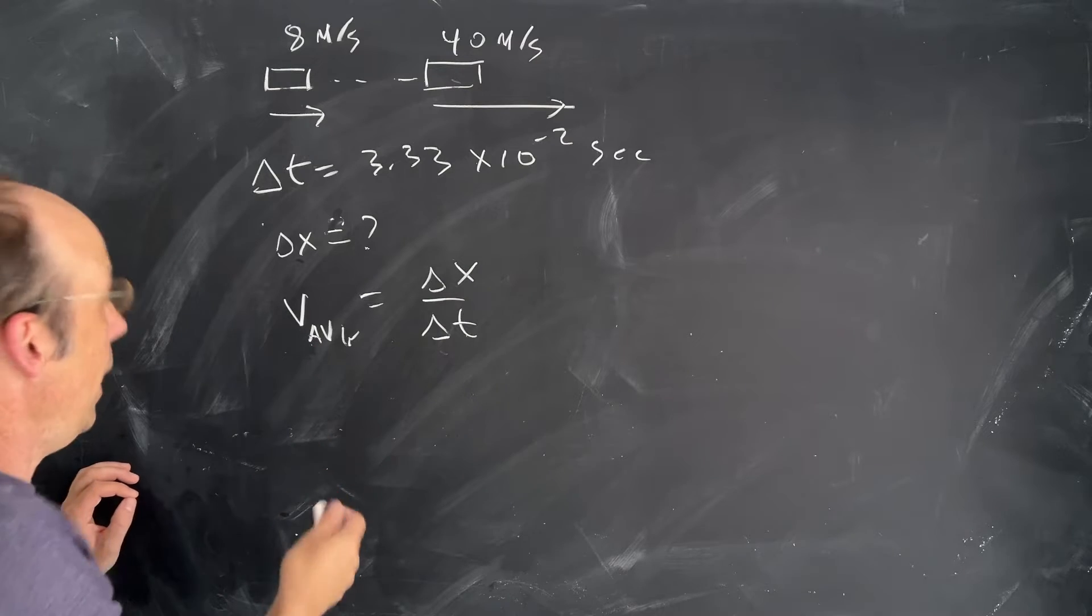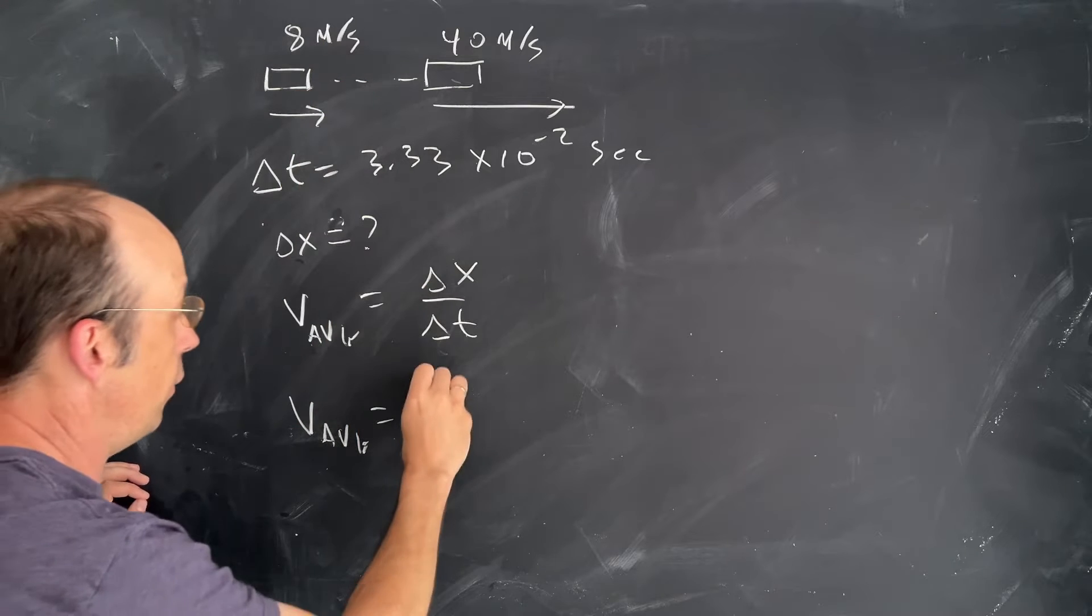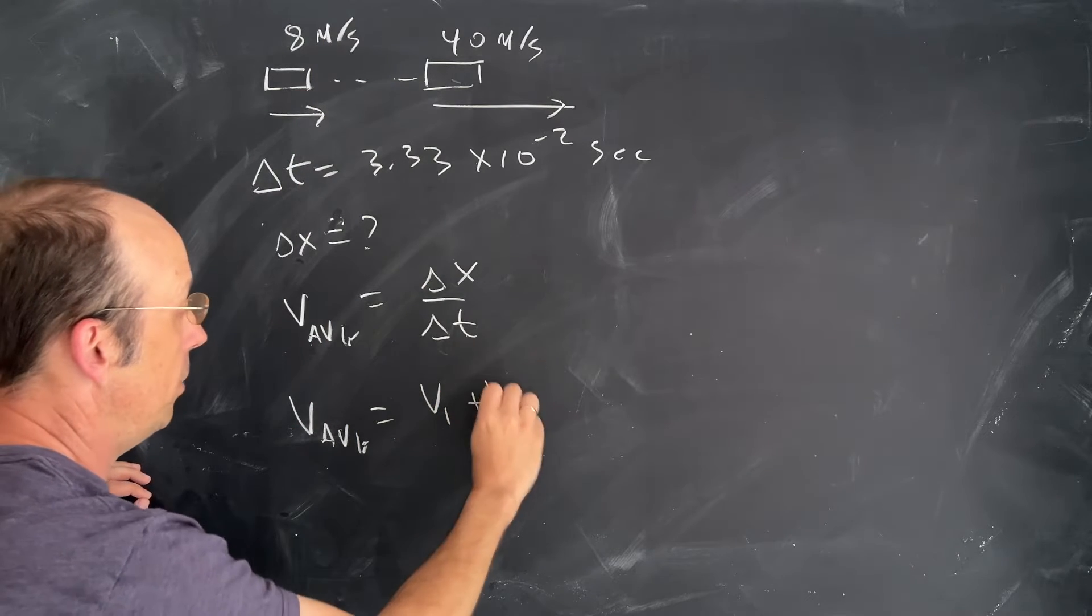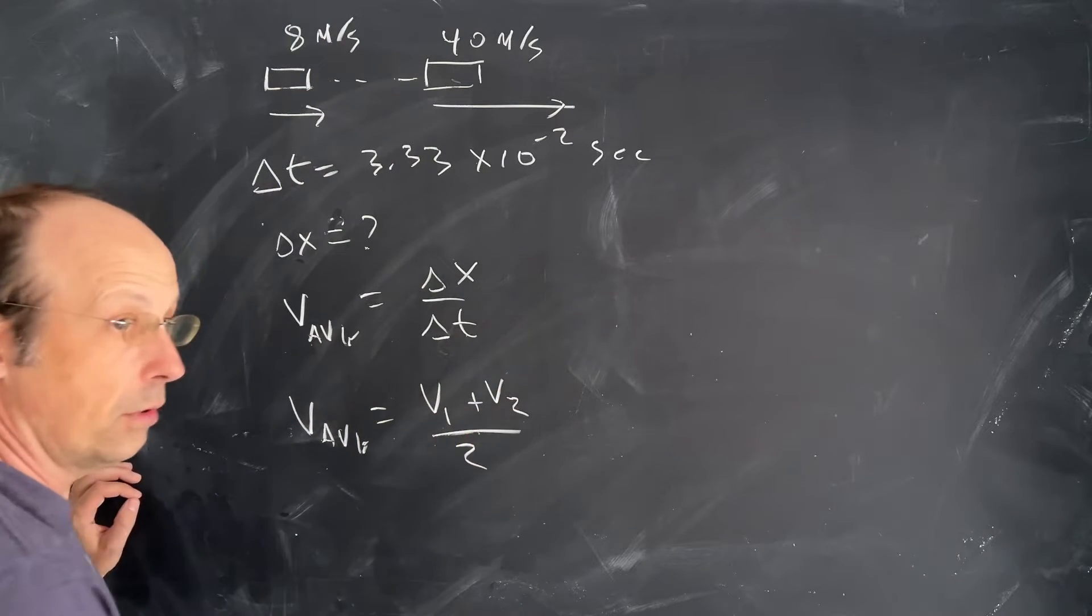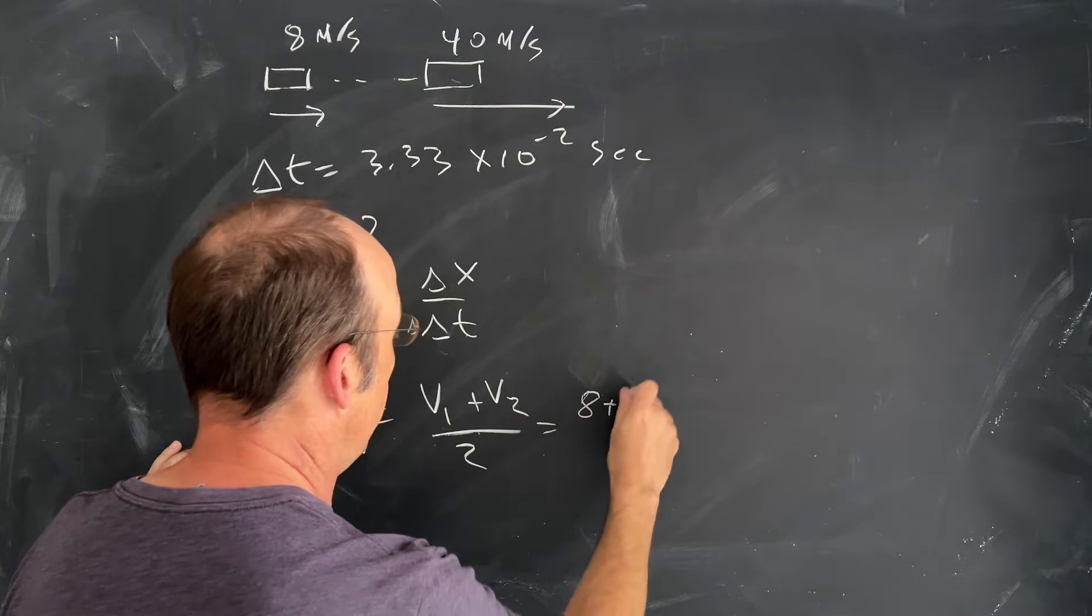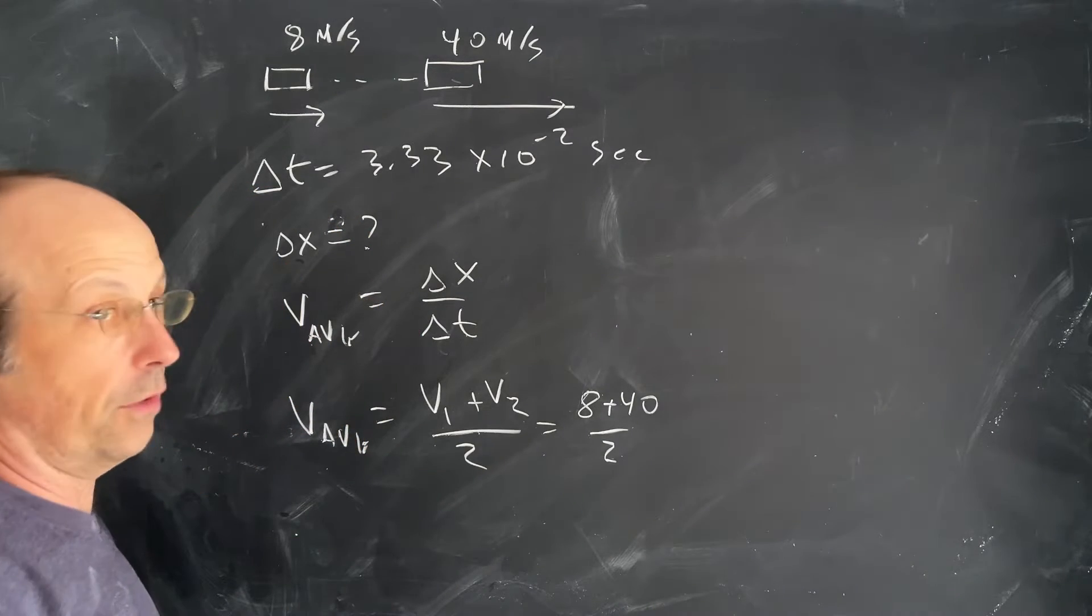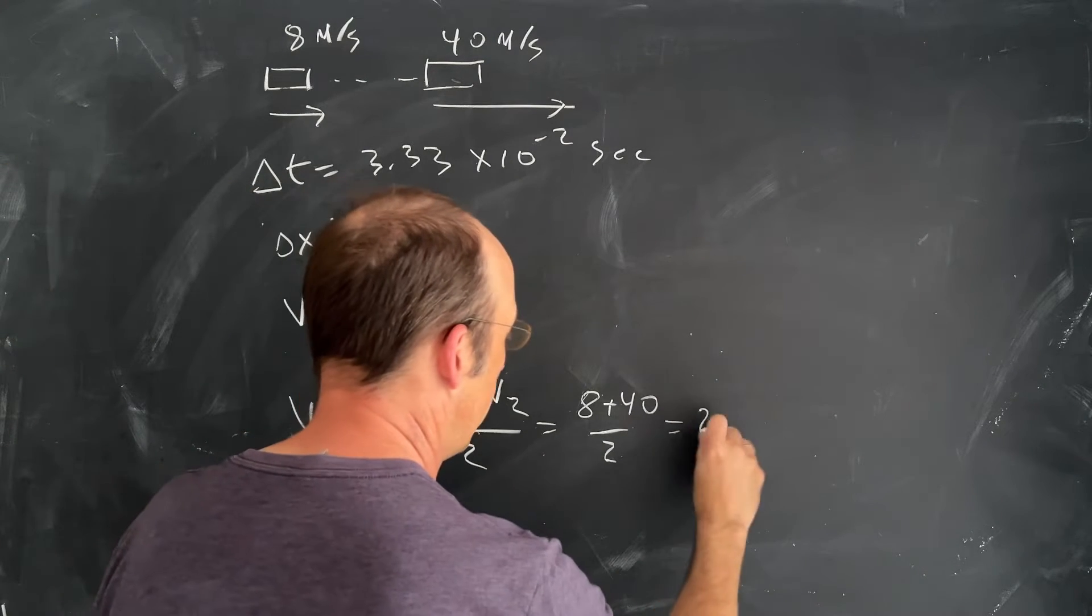But hey, I can find the average velocity. v average is going to be equal to the initial velocity, v1 plus v2 over 2. It's just the average, so that's going to be 8 plus 40 over 2. That's 48 over 2, which is 24. You can put that in your calculator.